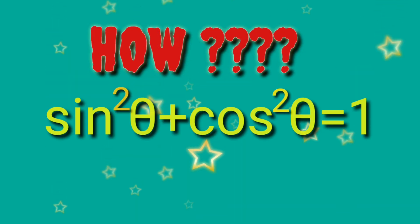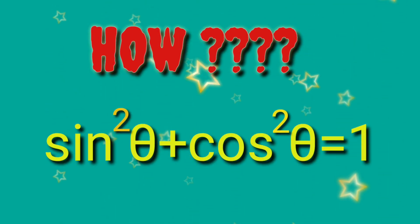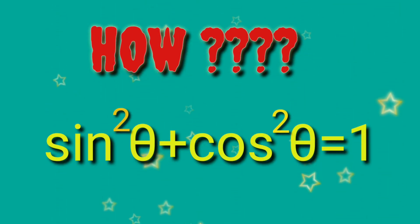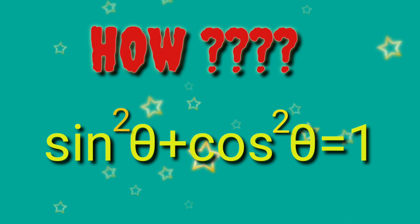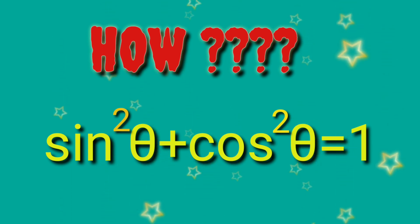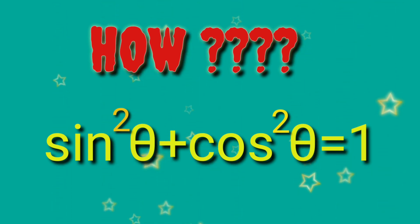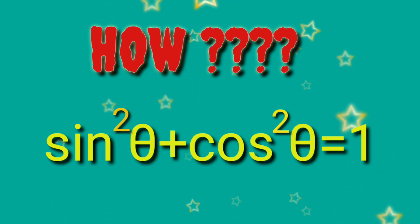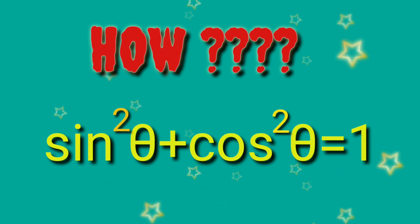Hi, welcome to JN Maths. This is Yoon Nageshwar. Today, we are going to derive a trigonometric identity, which is sin squared theta plus cos squared theta is equals to 1.